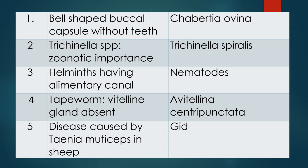Question five: Disease caused by Taenia multiceps in sheep. This is a very important frequently asked question. The answer is Gid. Very famous species and commonly occurring also.